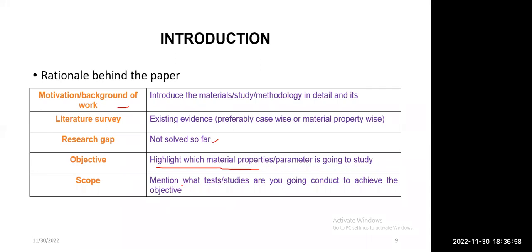In the introduction part, we need to remember: in the first paragraph, we need to introduce our study, material, and methodology very clearly. After that, we need to write the literature — the literature must be from the last three years; it is advised. If you mention something from the year 2000, already after 2000 so many papers are available online, and it will give a bad opinion to the reviewer. So always it is better to follow the last three to five years of literature.